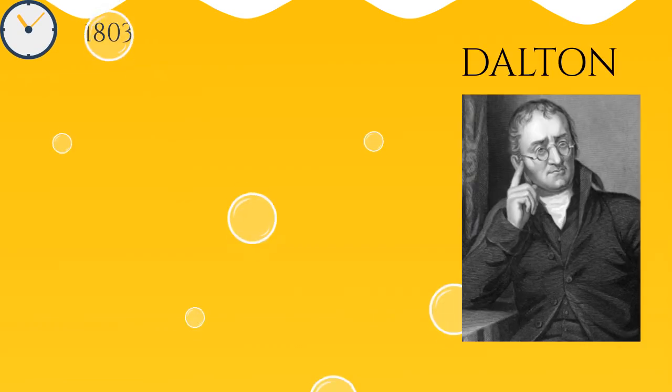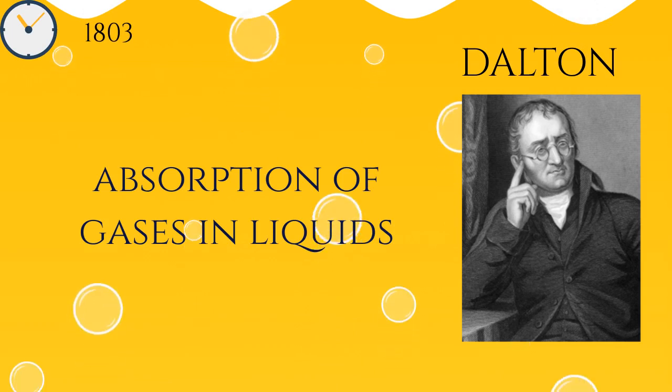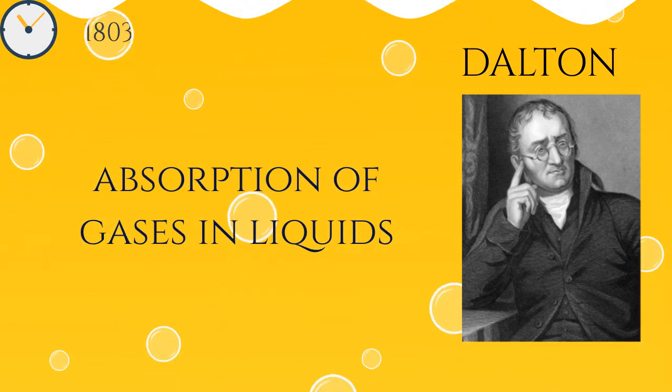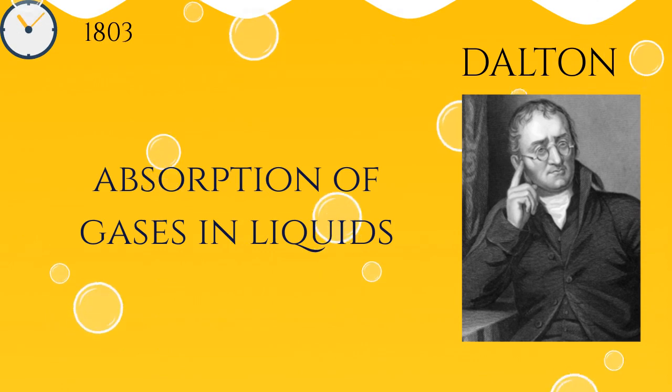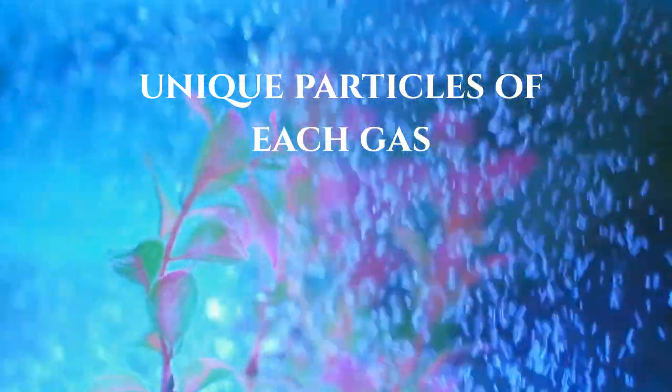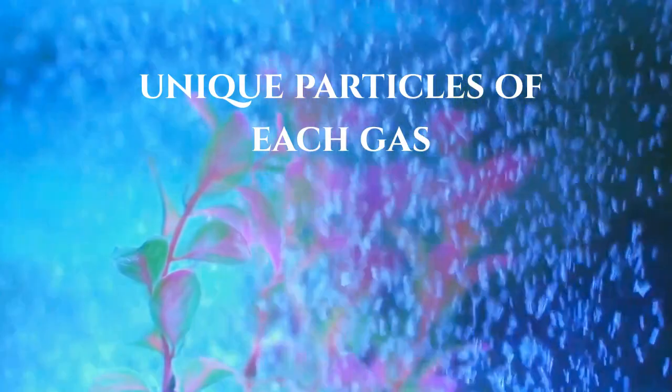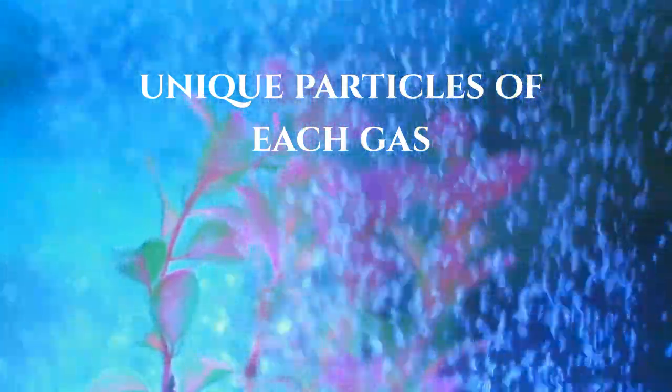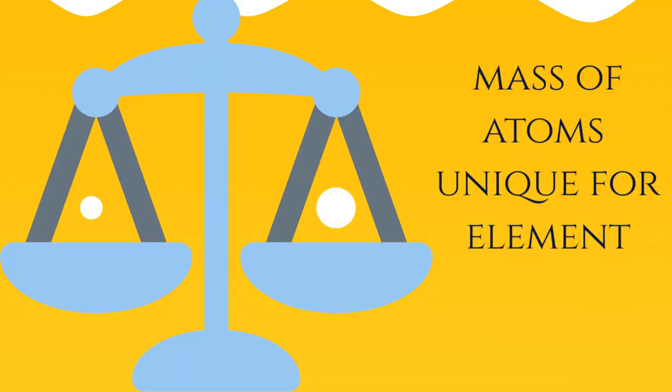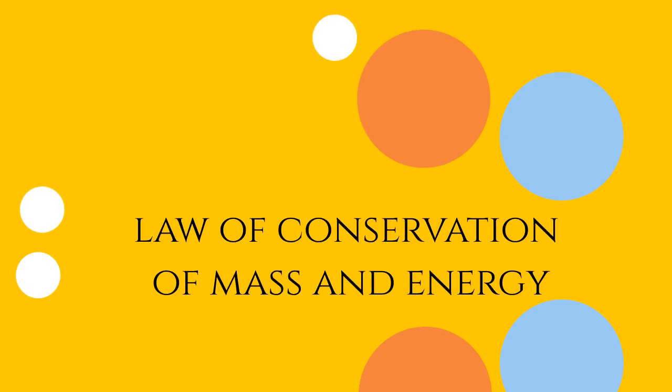In 1803, English chemist John Dalton, while studying absorption of gases and liquids and their vapour pressures, observed that the extent of absorption depends on the nature of the gas and its reactivity with water. He theorized that each gas must have different ultimate particles which will react or not react with water. He called these particles atoms. Atoms of different elements have different mass. He also observed that atoms can rearrange themselves in chemical reactions to form different substances.